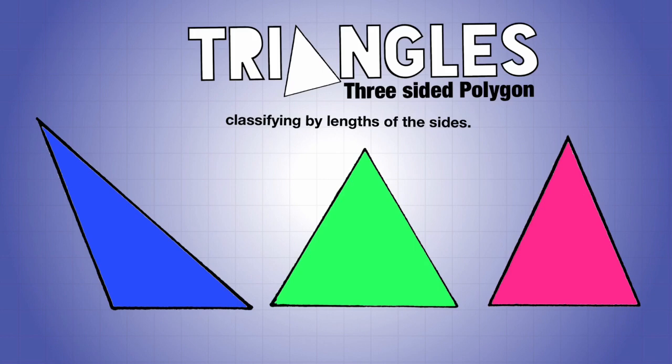First we have this triangle here. All three sides are of different lengths. When that happens, it's what we call a scalene triangle. Scalene means no sides are equal.